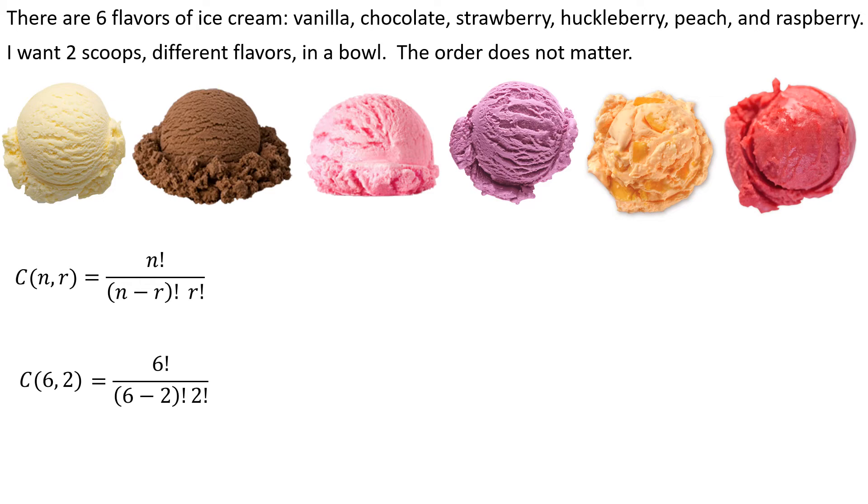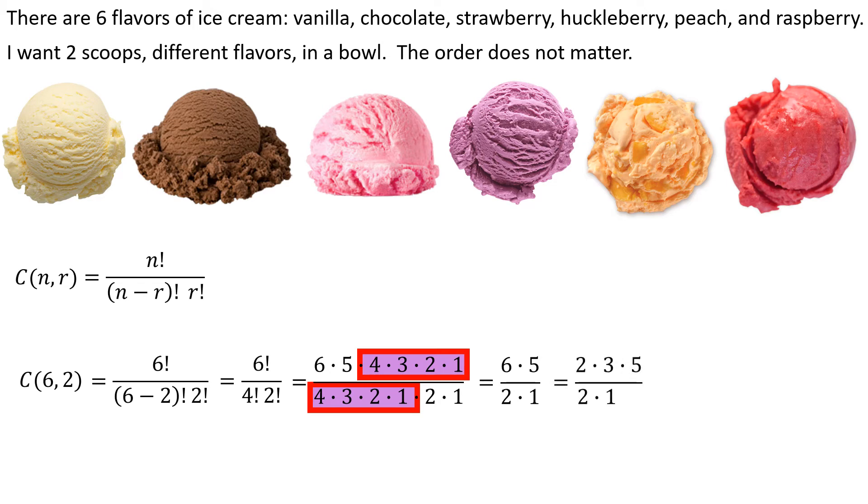So I've got 6 factorial over 6 minus 2 factorial times 2 factorial. And of course we can do a lot of canceling. All right, I've got a 4, 3, 2, 1 on top, a 4, 3, 2, 1 on the bottom. All those factors cancel out. And I could do 6 times 5 is 30, and then do 30 divided by 2 is 15. I like to do it this way though. I like to say, hey, 6 is 2 times 3. Cancel out the 2's. I'm left with 3 times 5, which is 15.